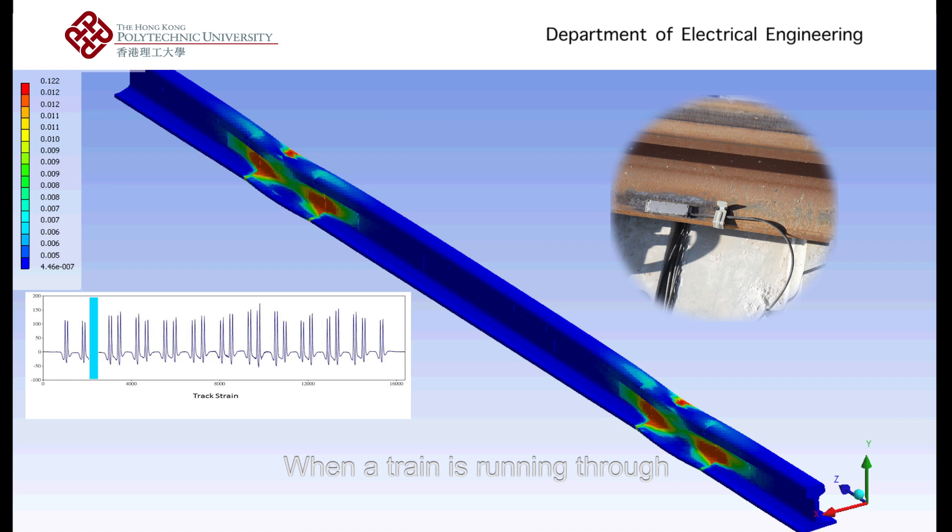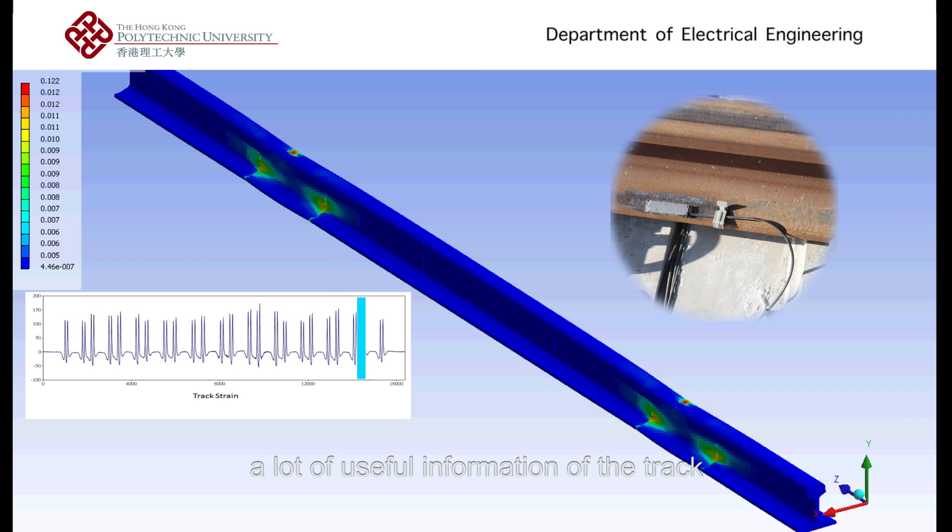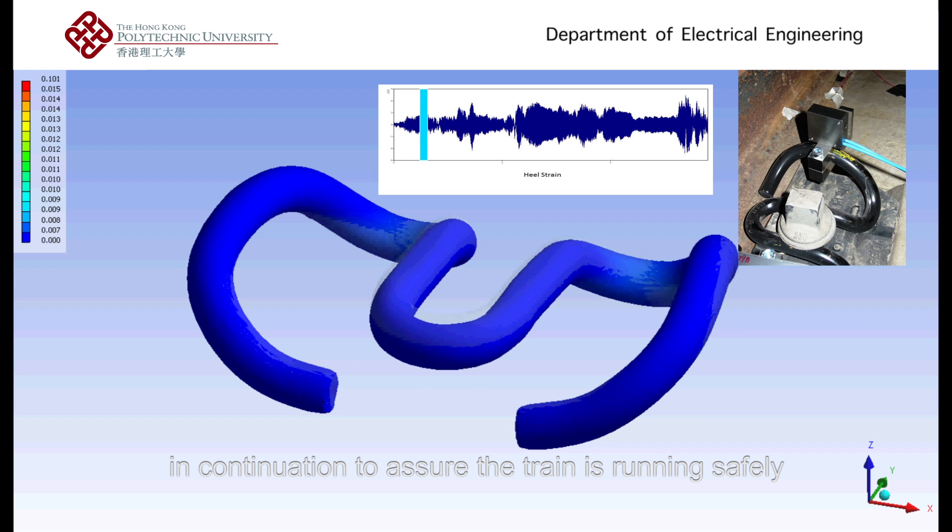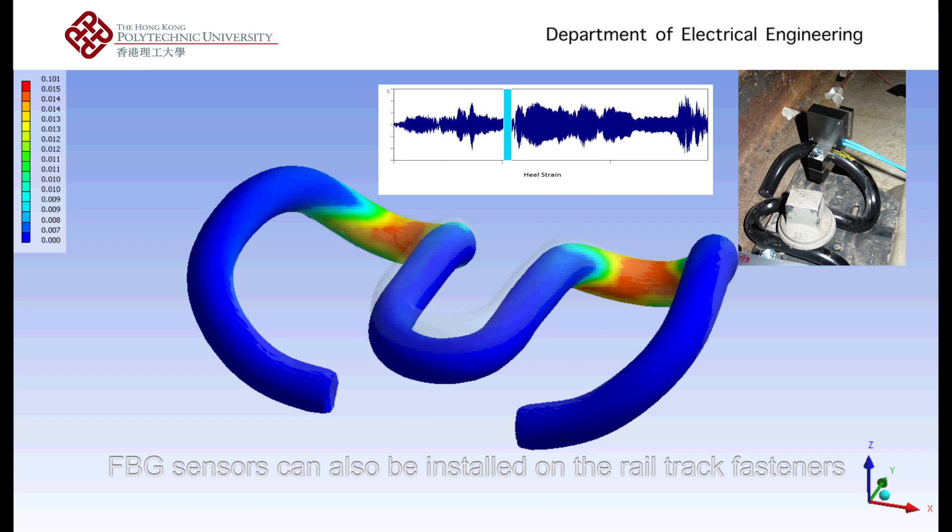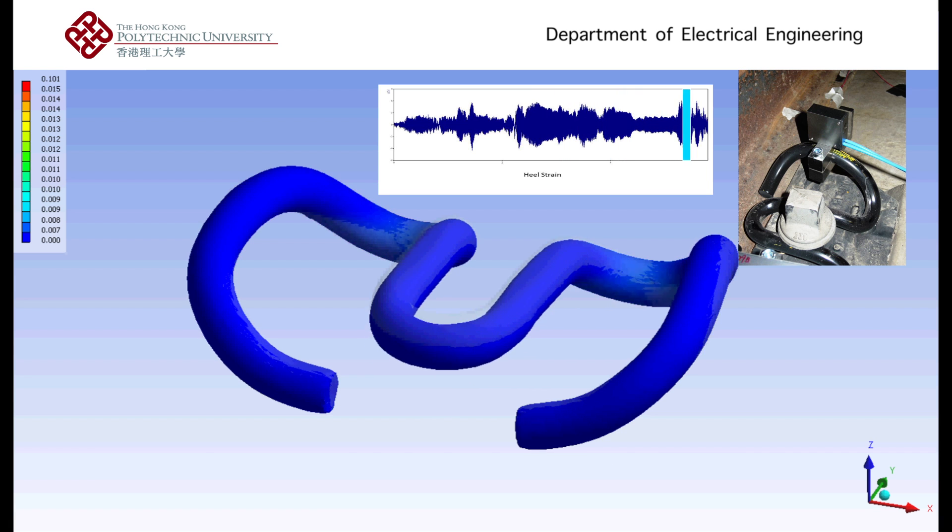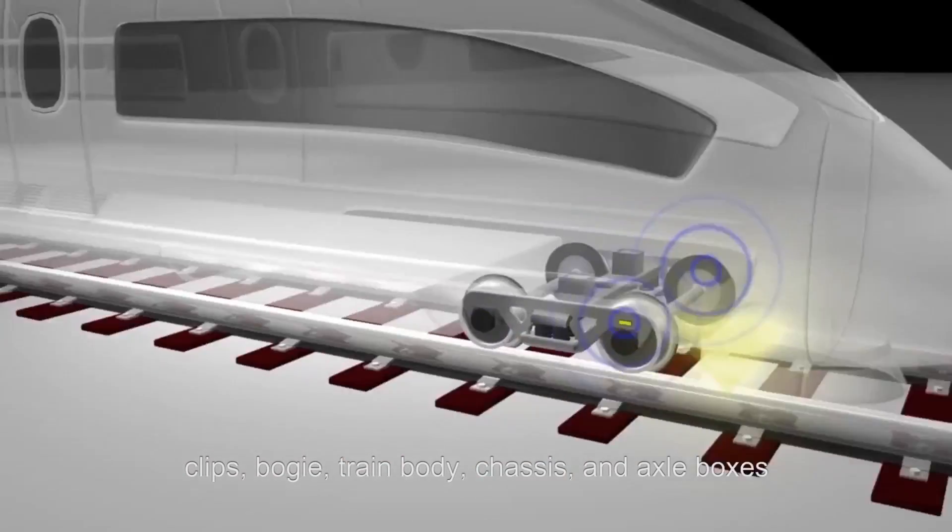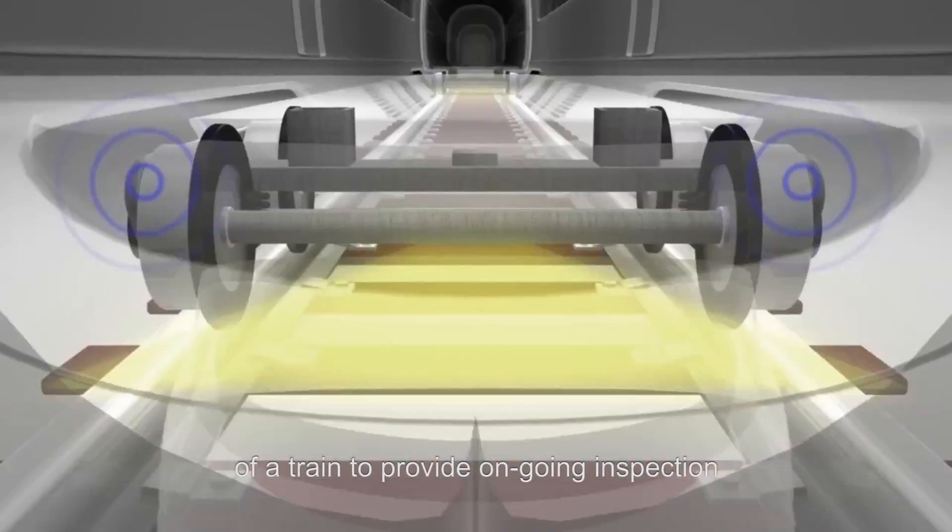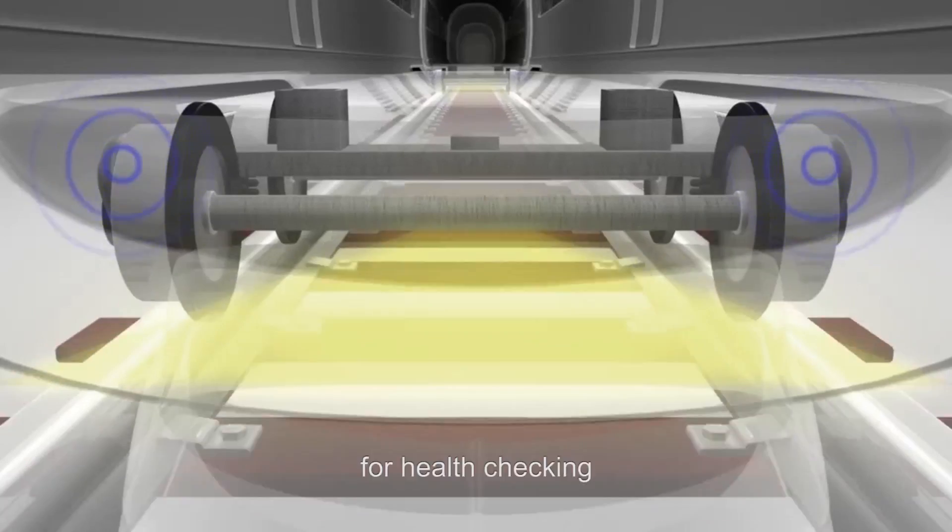When a train is running through, sensors installed on railway track can gather a lot of useful information of the track in continuation to assure the train is running safely. FBG sensors can also be installed on the rail track fastness, clips, bogie, train body, chassis and axle boxes of a train, to provide ongoing inspection for health checking.